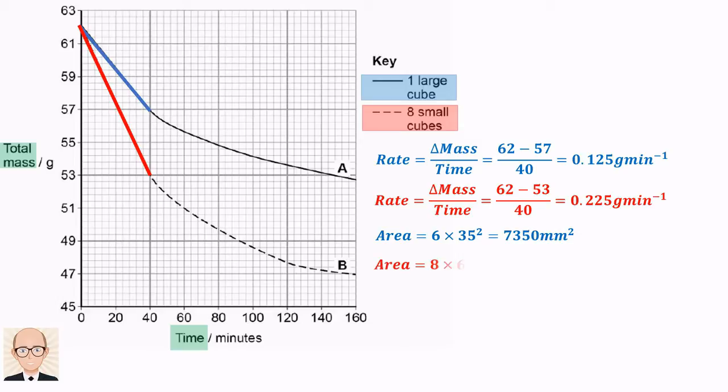The total area of the eight smaller cubes would be 8 lots of 6 x 17.5 x 17.5, which is 14,700 square millimetres.